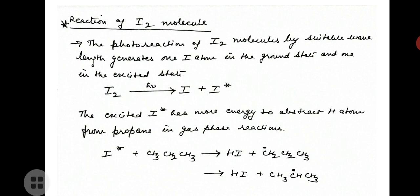One more example: the photo reaction of azo alkanes. In the vapor phase, when azo alkanes are photolyzed, they dissociate into alkyl radicals and nitrogen: CH₃N=NCH₃ + hν → 2CH₃• + N₂. Similarly, the photo reaction of HBr with olefins and acetylenes is used to synthesize alkyl bromides.